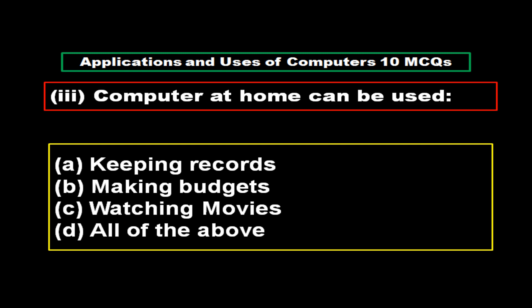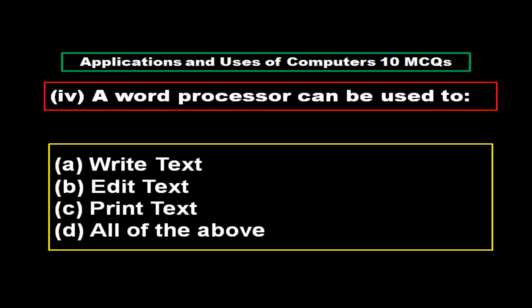Computer at home can be used for: Option A Keeping Records, Option B Making Budgets, Option C Watching Movies, Option D All of the above. And the right answer is Option D: All of the above.